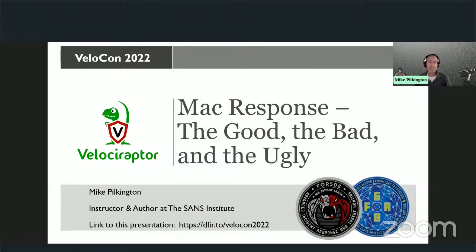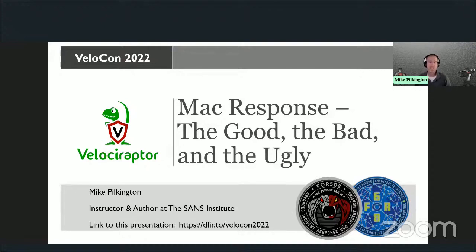I wanted to structure this from almost a newbie's perspective — how is the Mac operating system set up, and how can we do analysis on these systems? It is not the most straightforward platform, and that is certainly by design. Apple has really locked them down fairly significantly. That does not mean they're impenetrable. They make things difficult for malware, for attackers, in some cases even for users, and certainly for security tooling. So we need to look at some ways to get over those hurdles, specifically with Velociraptor.